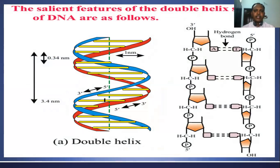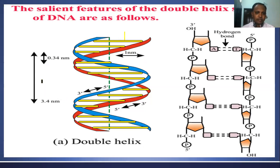Next we see the salient features of the double helix structure of DNA. Both strands are held together by hydrogen bonding — shown by yellow lines in the diagram. This is the double-stranded double helix proposed by James Watson and Francis Crick. The size of one turn is 34 Angstroms or 3.4 nanometers. The distance between adjacent base pairs is 0.34 nanometers.